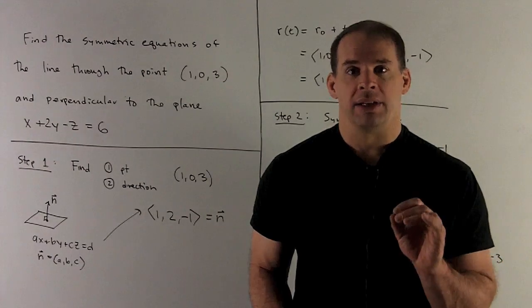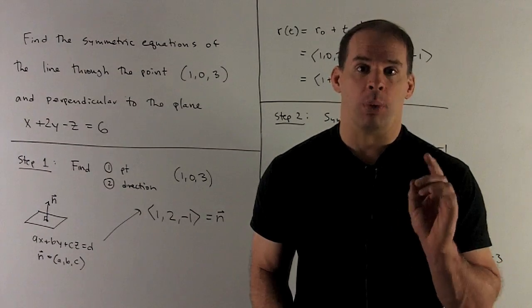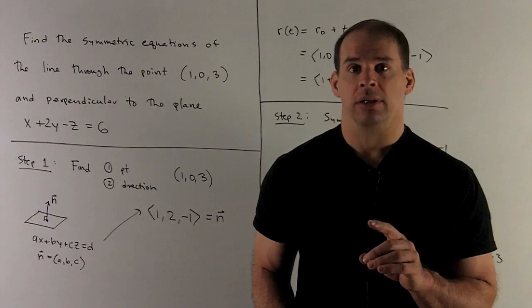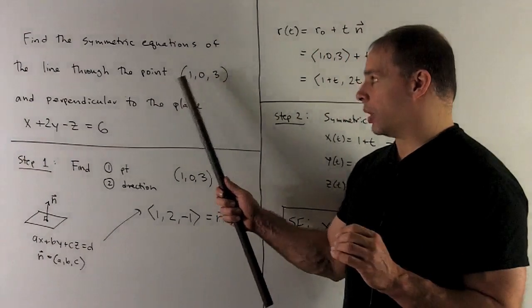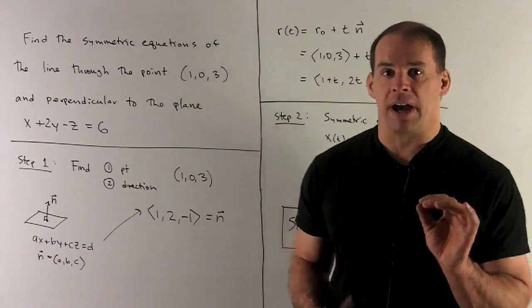Now, what do I need to make a line? I need a point and a direction. So what are we given? I'm given my point (1, 0, 3), so I need to find a direction.